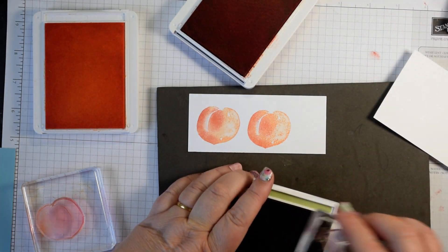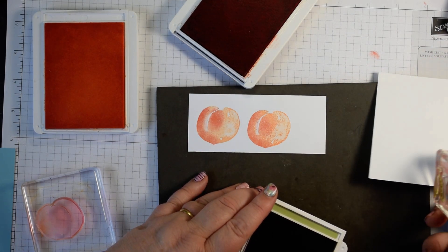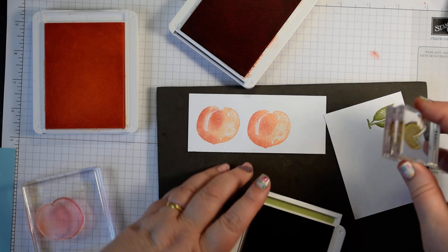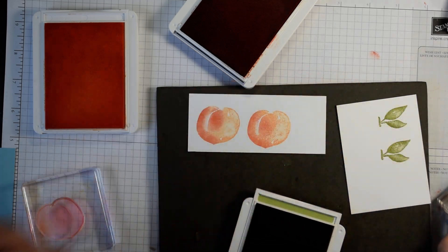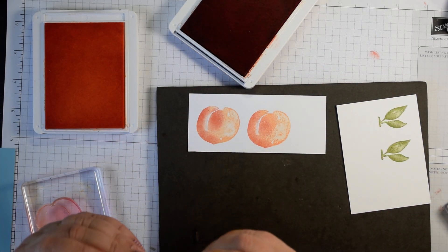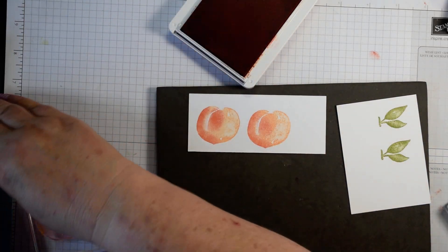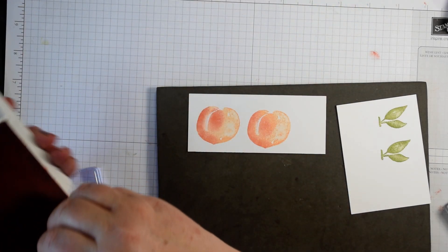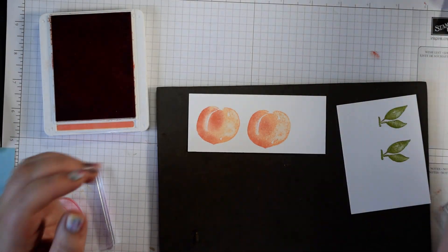And the leaves, you could do the same effect with the leaves. I'm just going to stamp them in pear pizzazz here now. But I have done some with a little bit of old olive in as well. They are distinctive stamps. So you've got the texture already there in the stamp. So that's our stamping. Let's pop the ink pads away so that I can try not to get everything covered in ink.